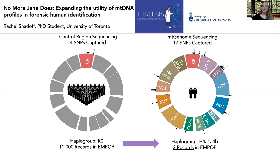My research aims to expand the utility of whole mitochondrial genome sequencing by optimizing a massively parallel sequencing approach for challenging sample types, such as postmortem tissue. Optimizing whole genome sequencing of soft tissues will make mitochondrial profile generation more useful because we will be able to get a complete picture of the genetic variation present while working with samples that are easier to process than the typical hard tissue, which is bones and teeth.